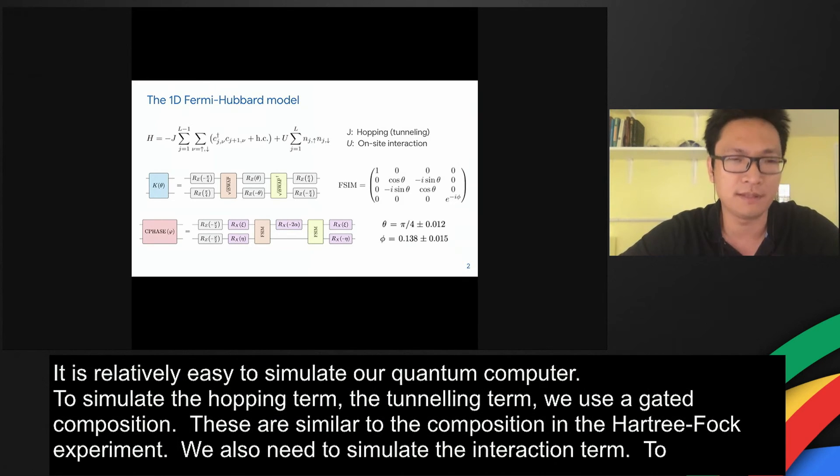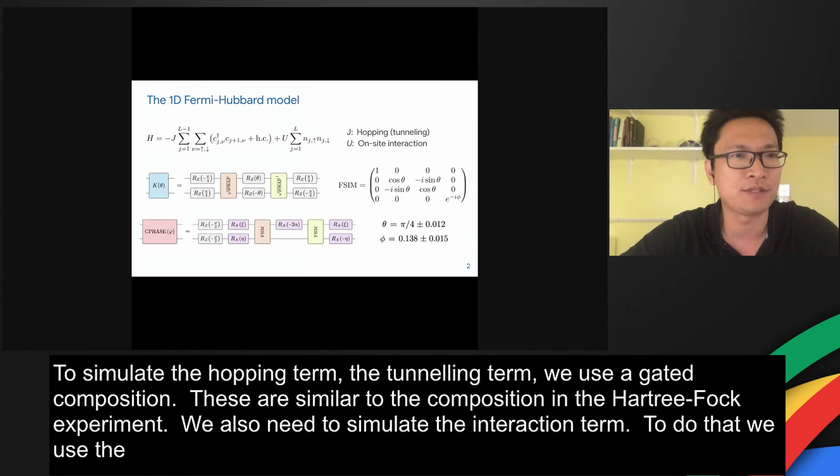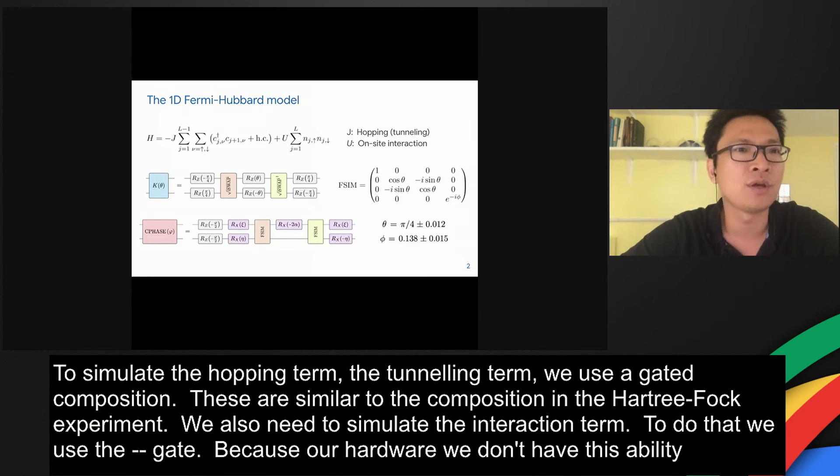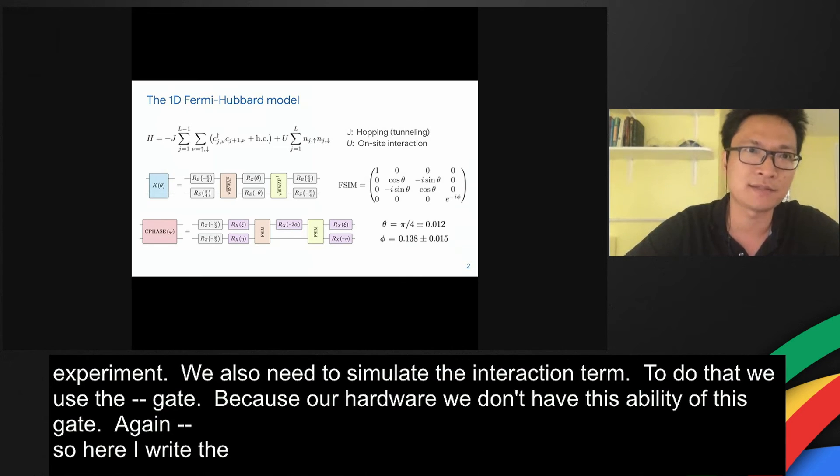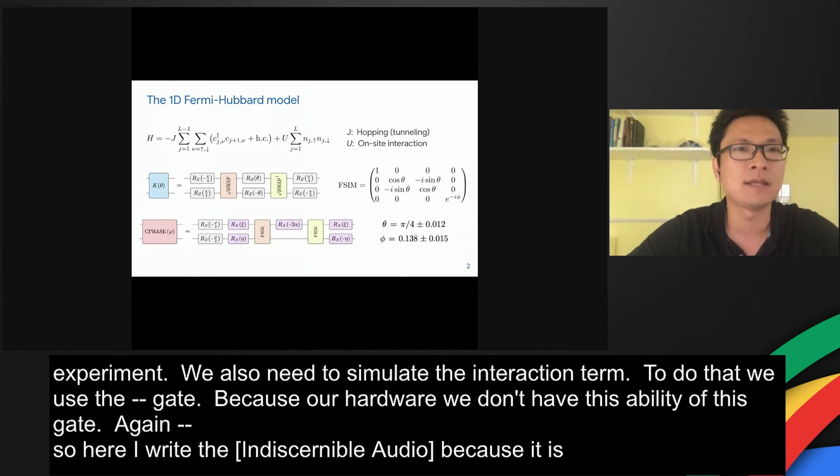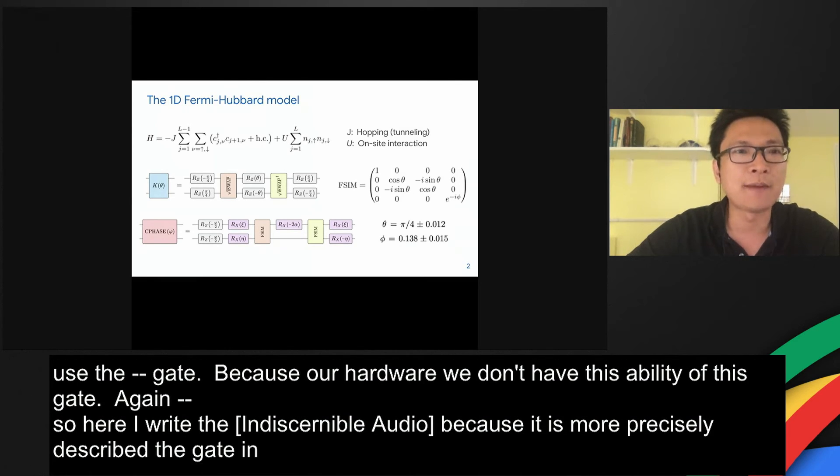Because in our hardware we don't have this tunability of the c-phase gate, we decompose it into two square root i-swap gates. Here I write the f-sim gate because it more precisely describes the gate in our hardware. The f-sim gate is a combination of the square root i-swap gate and a c-phase gate.